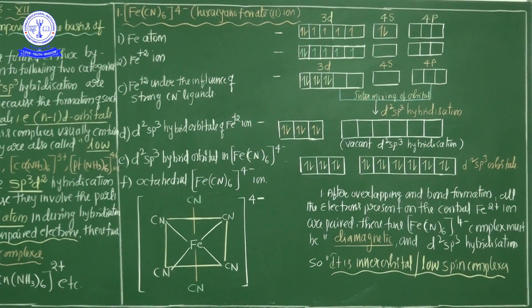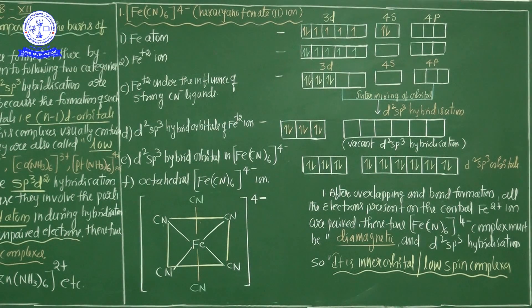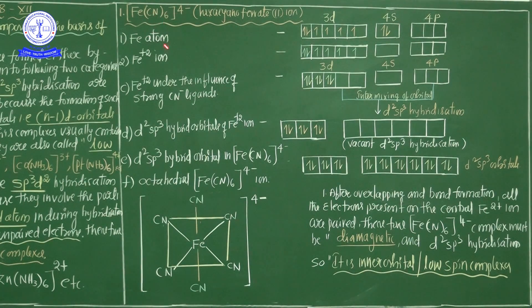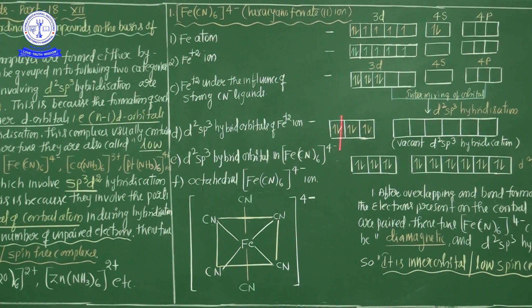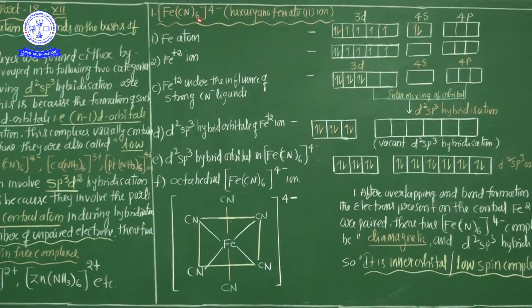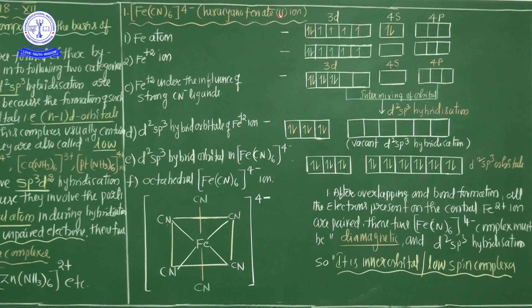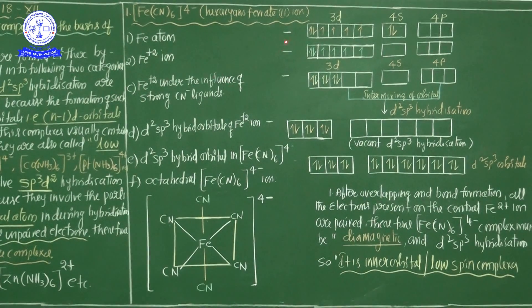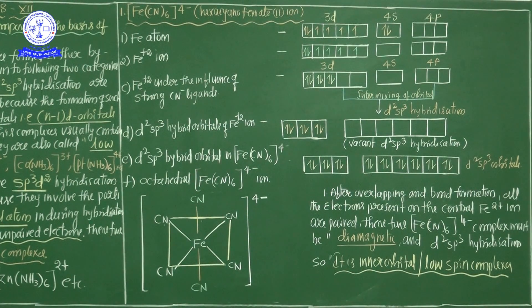Now we will discuss important examples from the CBSE textbook. The first example is hexacyanoferrate(II), [Fe(CN)₆]⁴⁻. The question: how is hexacyanoferrate(II) ion formed based on VBT theory? This is a four-mark question and every student should write the answer in this specific pattern.